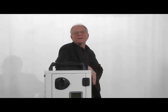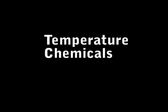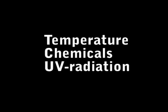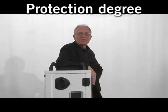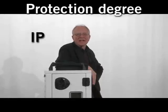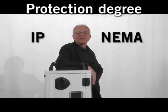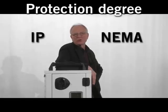What specifications must the hinge and enclosure meet? The environmental conditions determine your choice of material. In evaluating materials, we must consider the temperature range, chemical exposure, UV radiation, and moisture conditions. The protection degree determines your choice of hinge with regard to intrusion of dust and water.